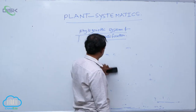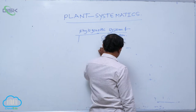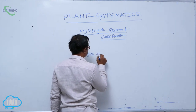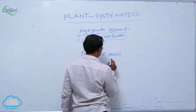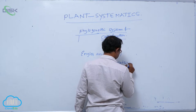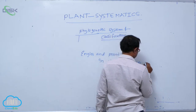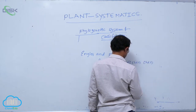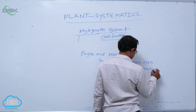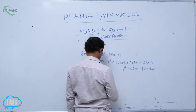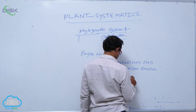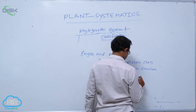The phylogenetic system of classification is explained for the first time. The phylogenetic system is a mechanism that is very handy for classification.